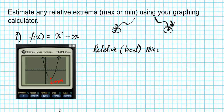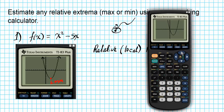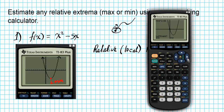The task is to use the graphing calculator to find the coordinates of that point — the vertex of the parabola. Press second → trace to access the Calculate feature, then scroll to option 3 (minimum) and press Enter. It asks for the left bound, so move to any point to the left of the minimum and press Enter.